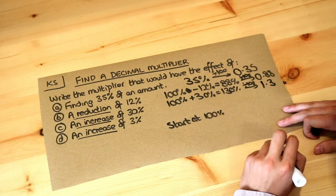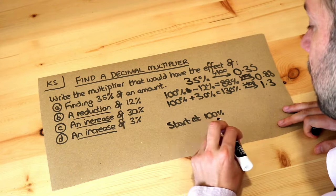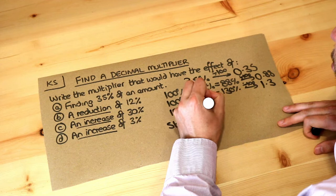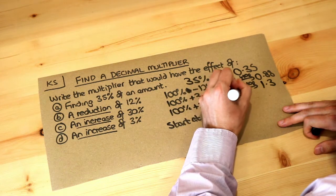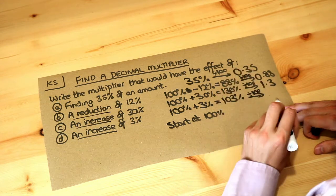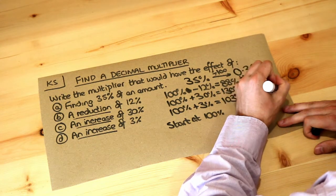And finally an increase of 3%. 100% plus just 3% is 103%. And if we divide that by 100, that gives us 1.03.